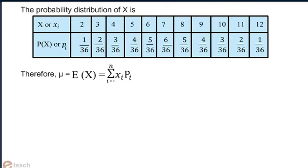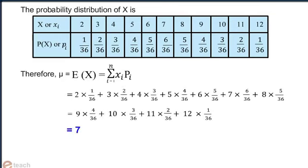Therefore, mu equals E(x) equals summation from i equals 1 to n of xi times pi, which comes out to be equal to 7.